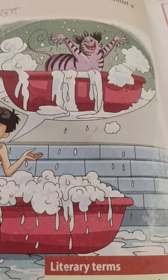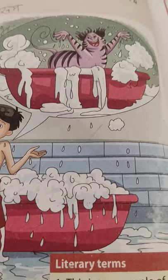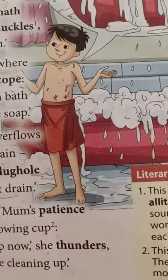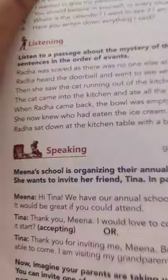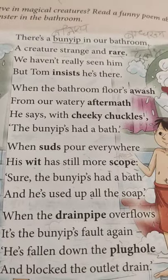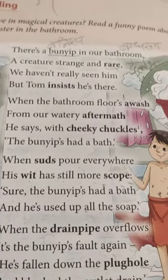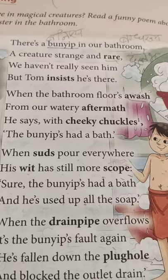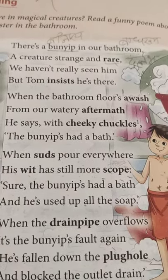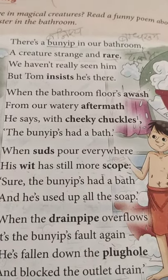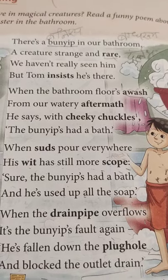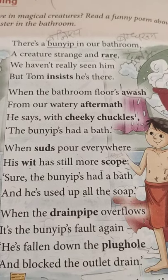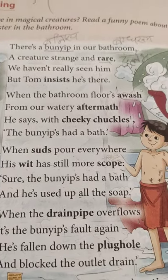There are three characters in the poem: Bunyip, Tom, and his mother. Let's start reading this poem. 'There's a Bunyip in our bathroom, a creature strange and rare. We haven't really seen him, but Tom insists he is there.'